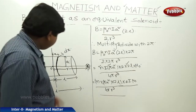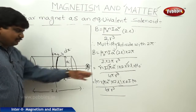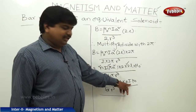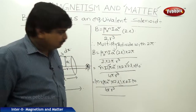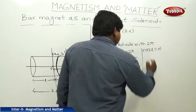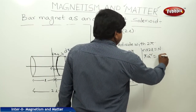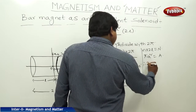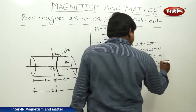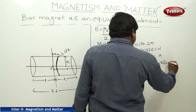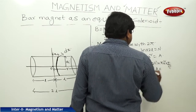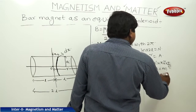What is N into 2L? Number of turns per unit length into length is nothing but the number of turns in the length — that is capital N. Pi A square is the area of the circle. I is the current. N into 2L into pi A square into I is equal to NiA, which is the magnetic moment M.